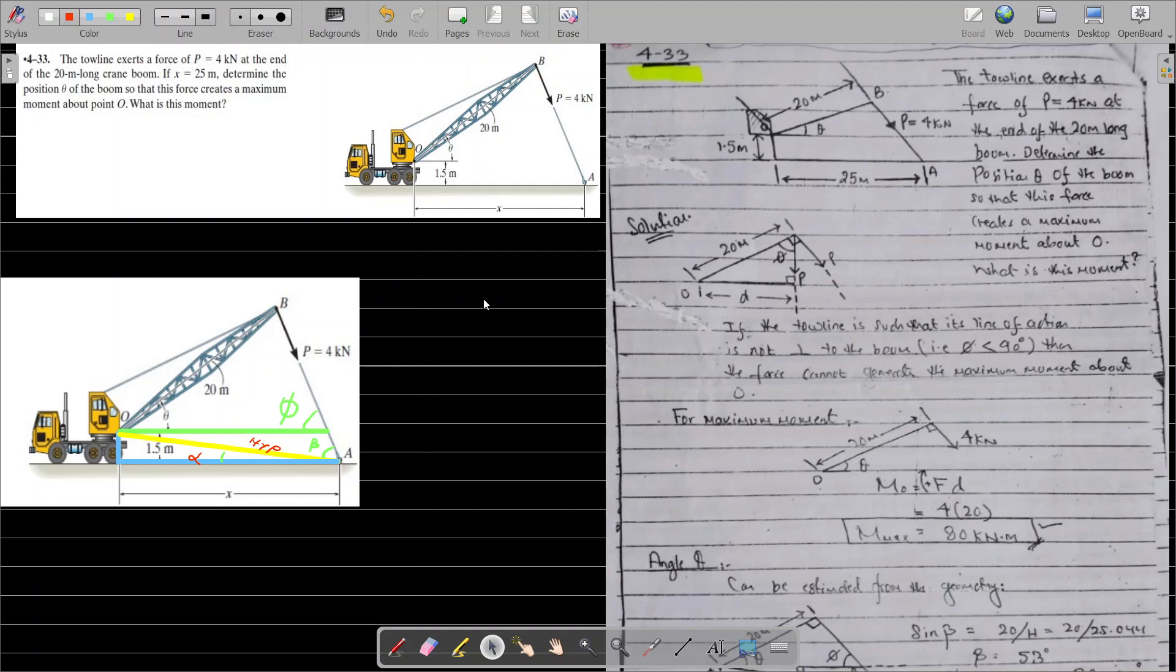The problem at hand today is that we have a crane, and along the crane there is a toe line which is fixed at point A. This toe line is exerting a force P equals 4 kilonewtons. This 4 kilonewton force is at the end of the 20 meter long crane boom.